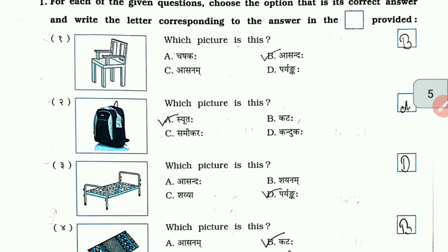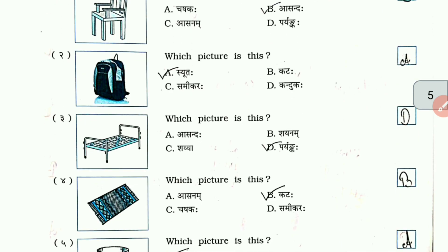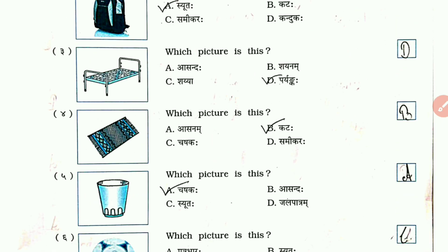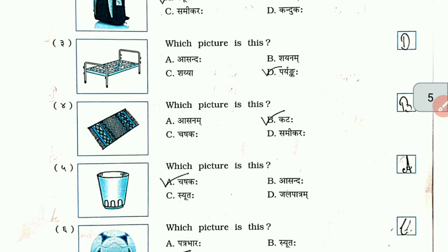Which picture is this? The answer for number 1 is option B — Asandha. Which picture is this? The answer for number 2 is option A. Number 3: which picture is this? The answer is option B — Pariyatka.